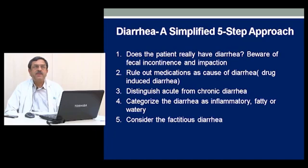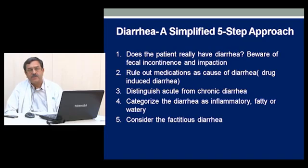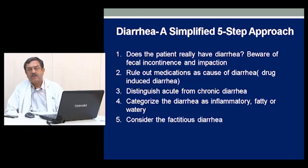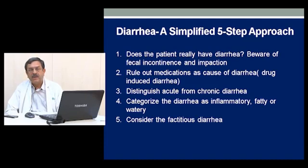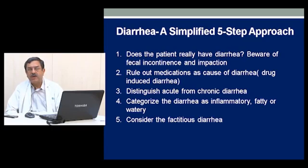First and foremost, we must know whether the patient actually has diarrhea. We must be aware of two conditions which most commonly mimic diarrhea: fecal incontinence or fecal impaction. We must also rule out whether the patient is on any medication which can result in diarrhea, and in this a good history is very important. Any diarrhea occurring with the onset of a new medicine could be linked to the intake of that medicine. The next step is to categorize acute and chronic diarrhea into inflammatory, fatty, or watery. Last but not least, we should also be aware of factitious diarrhea.